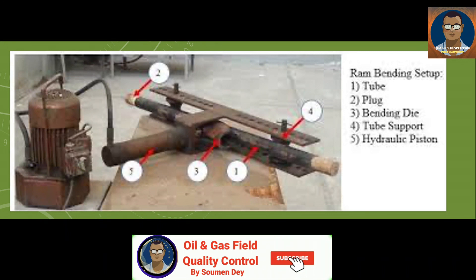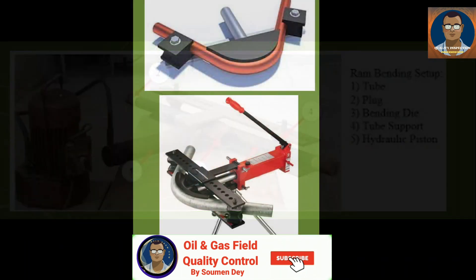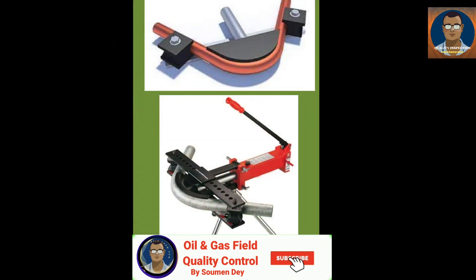The ram bending setup consists of a tube, plug, bending die, tube support, and hydraulic piston. There are few machine types; you can see a sample of a hydraulic ram bending machine in the picture.